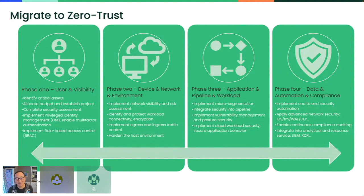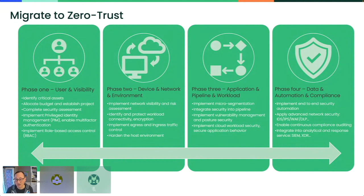It's a lot to swallow — supply chain, zero trust, all the seven pillars. Take it in phases. Our big advice: first, make sure your user access controls are clearly defined, two-factor authentication, and role-based access controls are in place for all tools in the supply chain. Second, device and network. Third, pipeline and workload — we're going to focus on the pipeline today. Next week's masterclass will cover how to secure the workload when it's running in production and how to automate that security to achieve compliance.